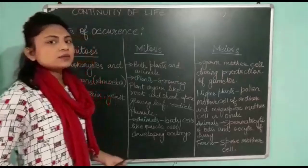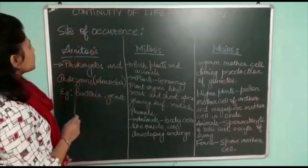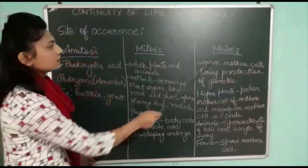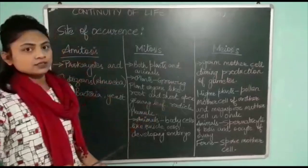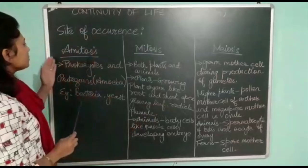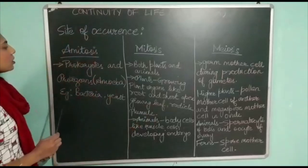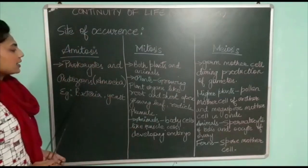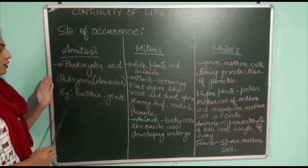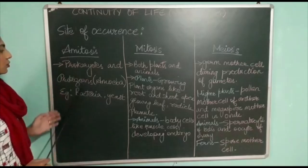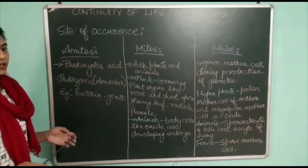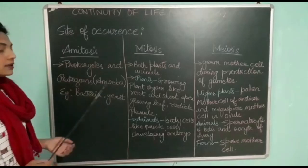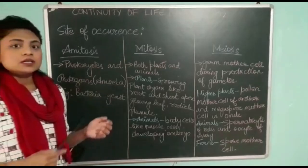Next we will study about the site of occurrence of these three types of cell division. Amitosis cell division occurs in prokaryotes and protozoans. Most of the prokaryotes and protozoans, for example bacteria and yeast, undergo amitosis cell division.